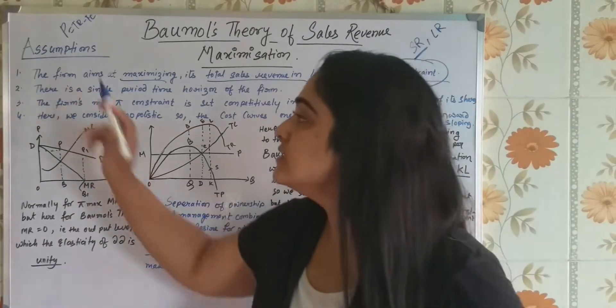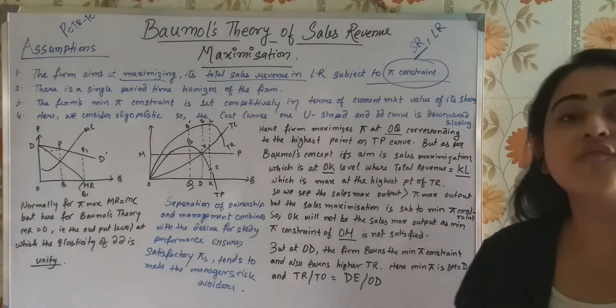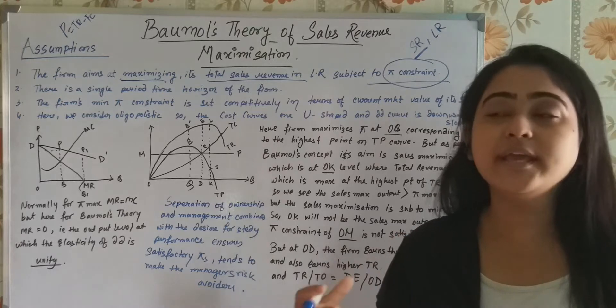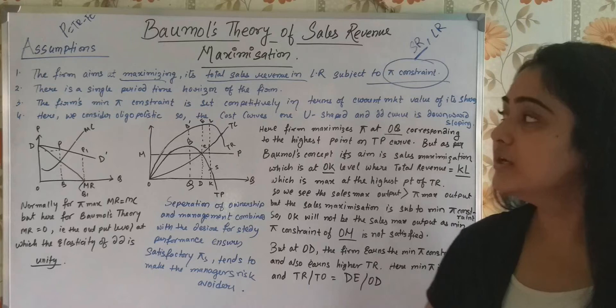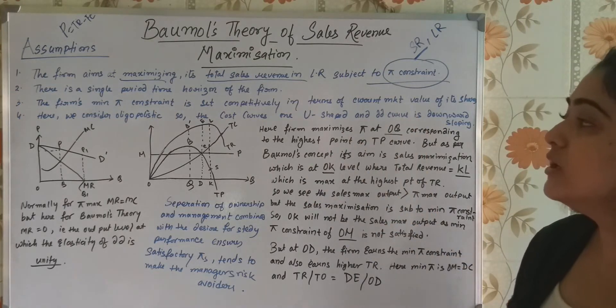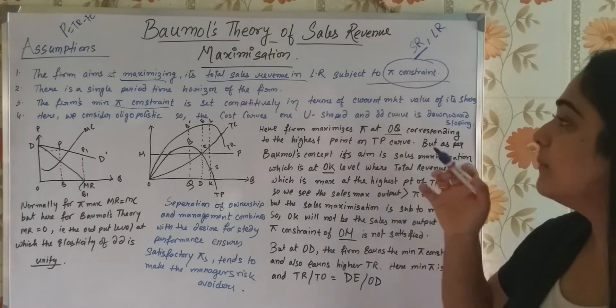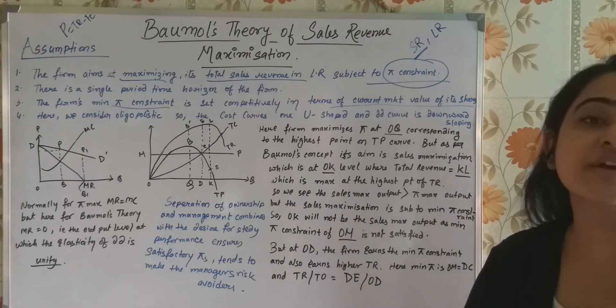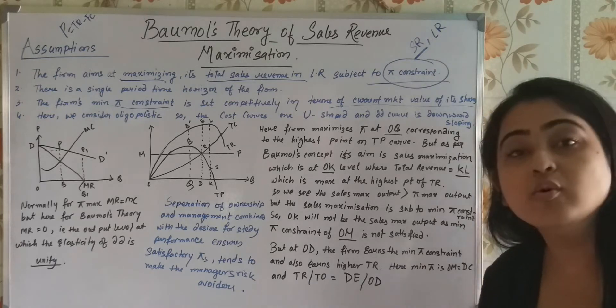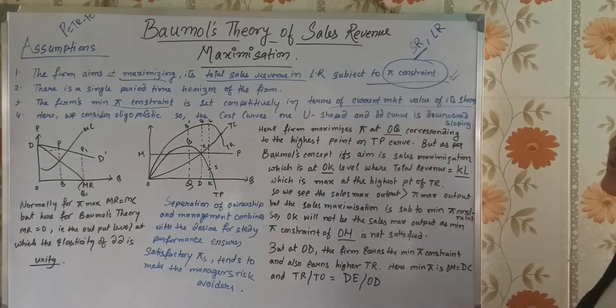Then comes the next assumption. There is a single period time horizon of the firm. It's a continuous single time period. Third is, the firm's minimum profit constraint is set competitively in terms of current market value of its share. How the minimum profit is to be set? How this profit constraint is to be set? It is set in terms of the current market value of its shares.